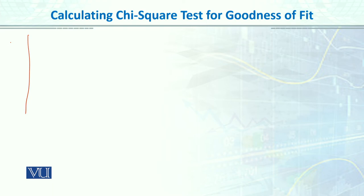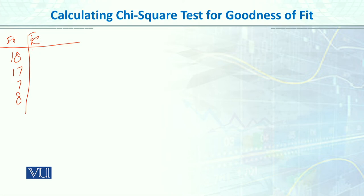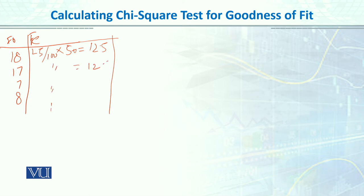Our observed frequencies are 18, 17, 7, and 8. For expected frequencies, equal preference means 25% in each category. We multiply the percentage by N=50, giving F_E = 12.5 for each category. Since we said all categories are equally distributed, the expected frequency is 12.5 for every category.